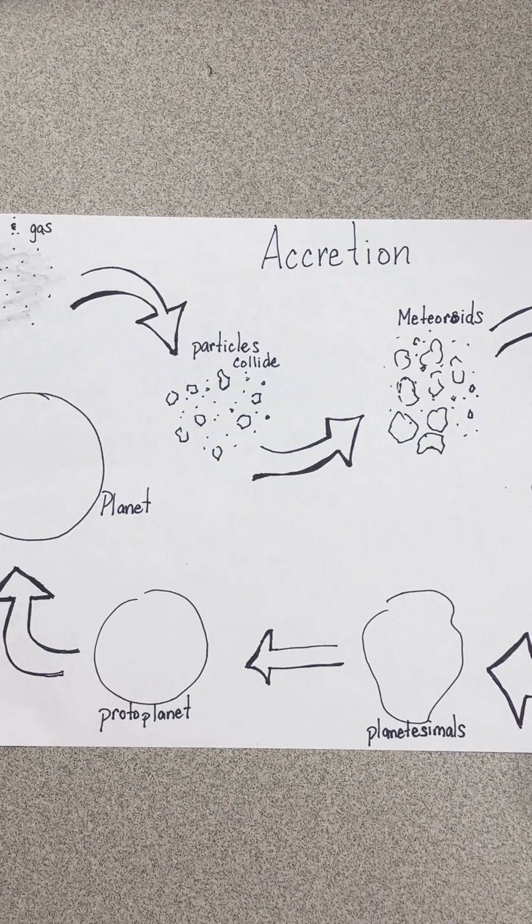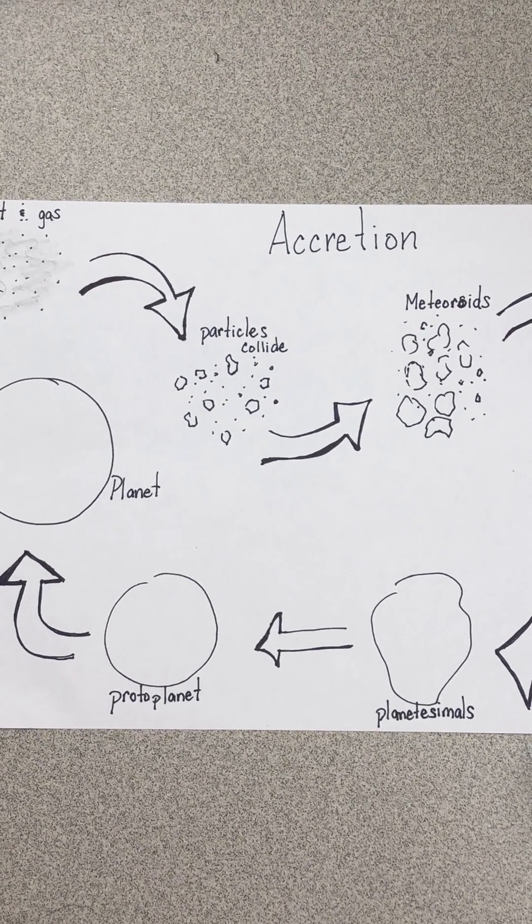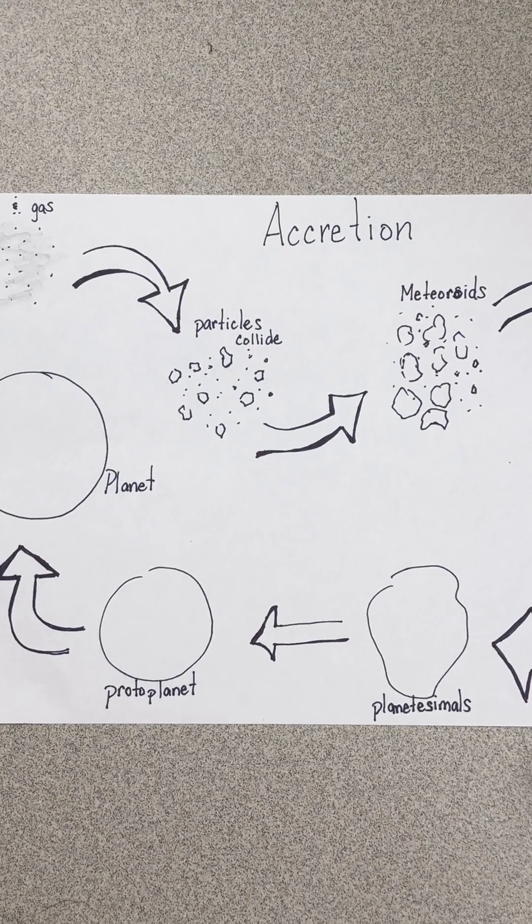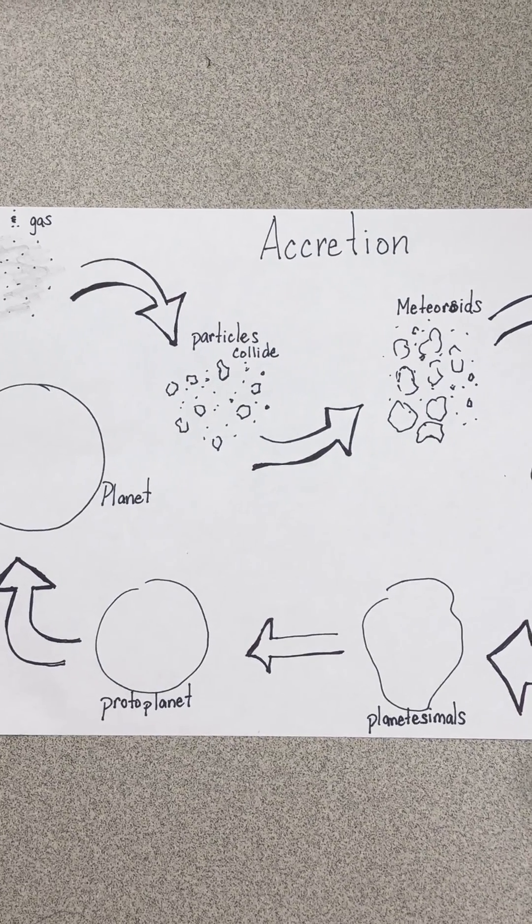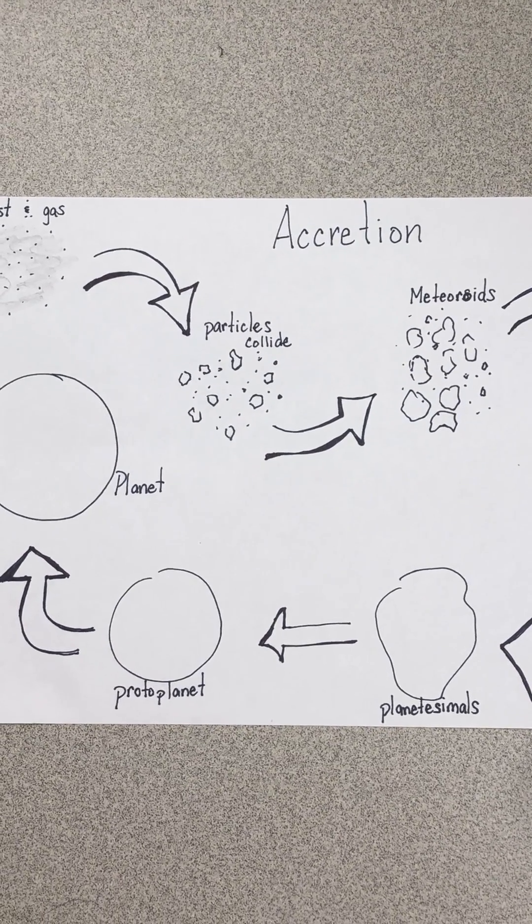The material with lower melting points was swept further from the sun past the frost line. There was much more material to create our large Jovian planets.